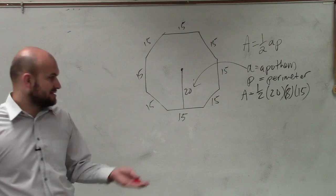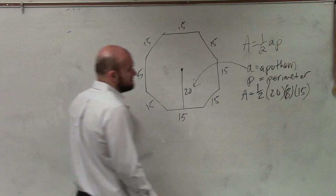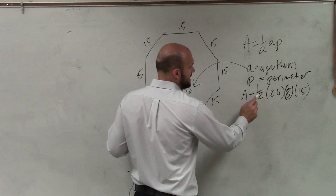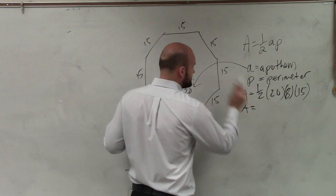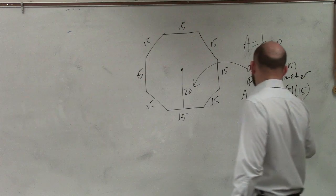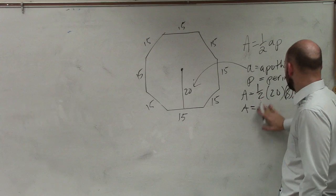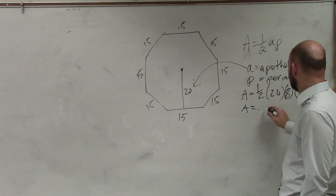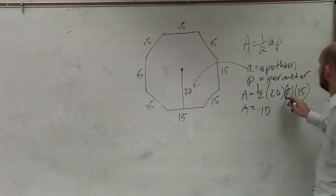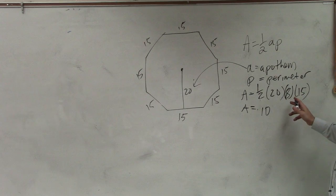Yeah, right. So that's going to end up being 120. 8 times 15 is 120. Times 1 half is 60. So I have a equals, I'll have to do it this way. 1 half times 20 is going to be 10. 8 times 15 is 120.